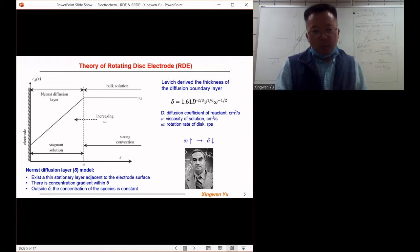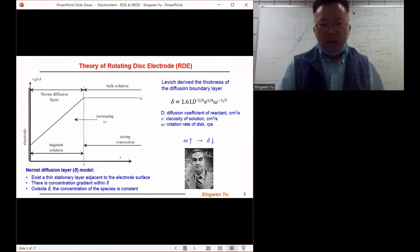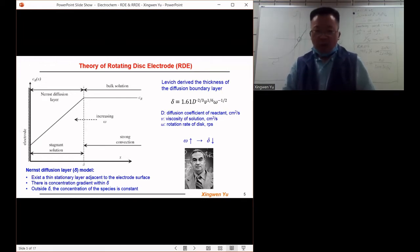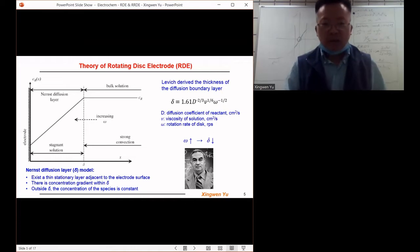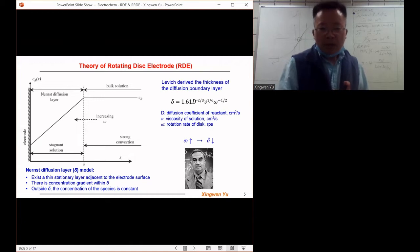Delta equals 1.61 d^(-2/3) ν^(1/6) ω^(-1/2). D refers to the diffusion coefficient of the reactant species. ν is the viscosity of the electrolyte solution. Ω is the rotating speed of the disk electrode.